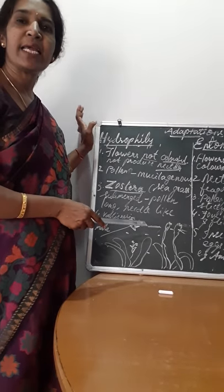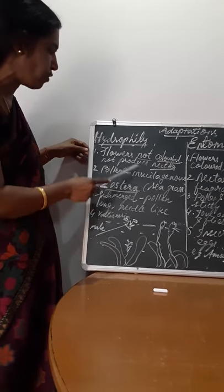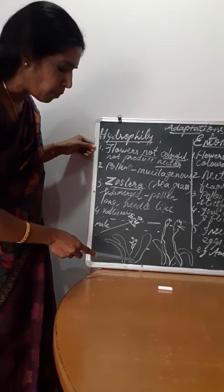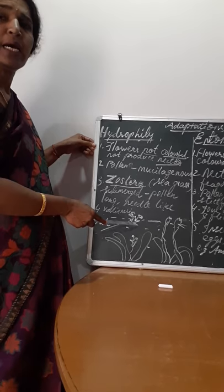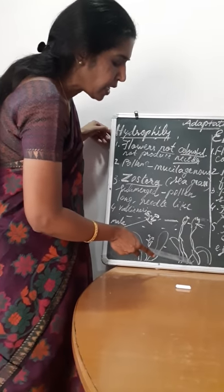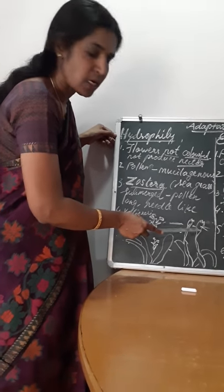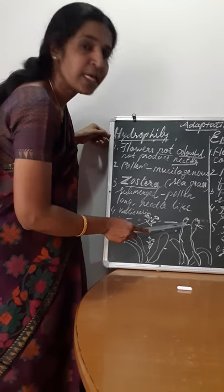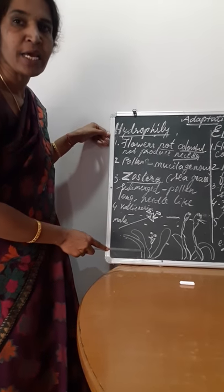Vallisneria and Hydrilla are also examples of submerged hydrophytes which ensure hydrophily. In Vallisneria, the plant bears male and female flowers separately. The male flowers with pollen mature, pollen is released, and since it is a submerged plant, it floats on the surface of water. When the stigma matures, the female flower has a stalk which comes up and floats on the surface. By water current, the pollen reaches the female flower, and after pollination, this stalk coils up. This is the adaptation Vallisneria has.